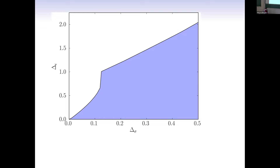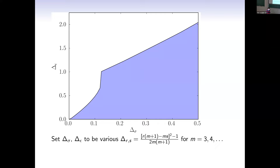Making frequent reference to this exclusion plot, which should be fairly familiar by now: this is a bound on how high the gap for scalars can be in two dimensions as a function of the dimension of the external scalar. Every conformal field theory that we understand well in two dimensions needs to live inside the blue allowed region.